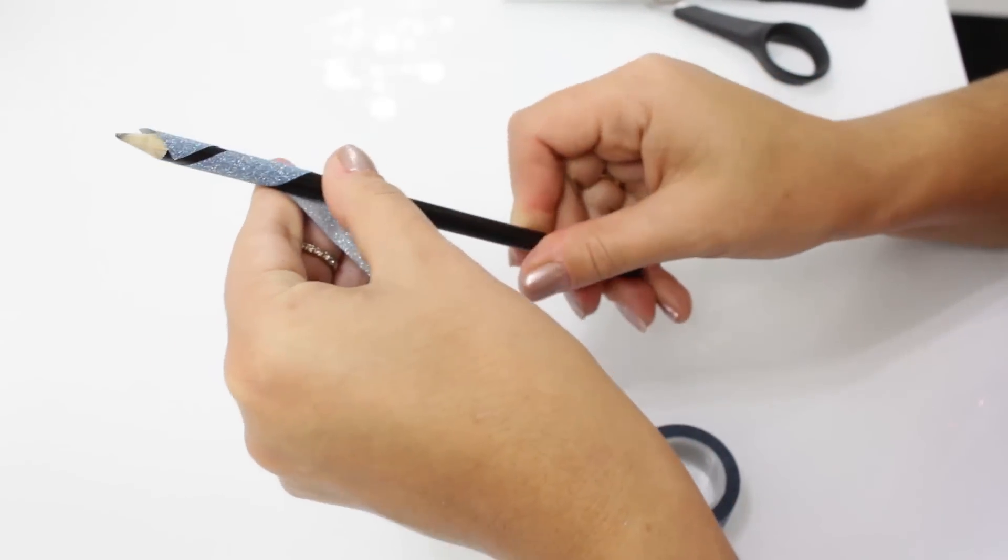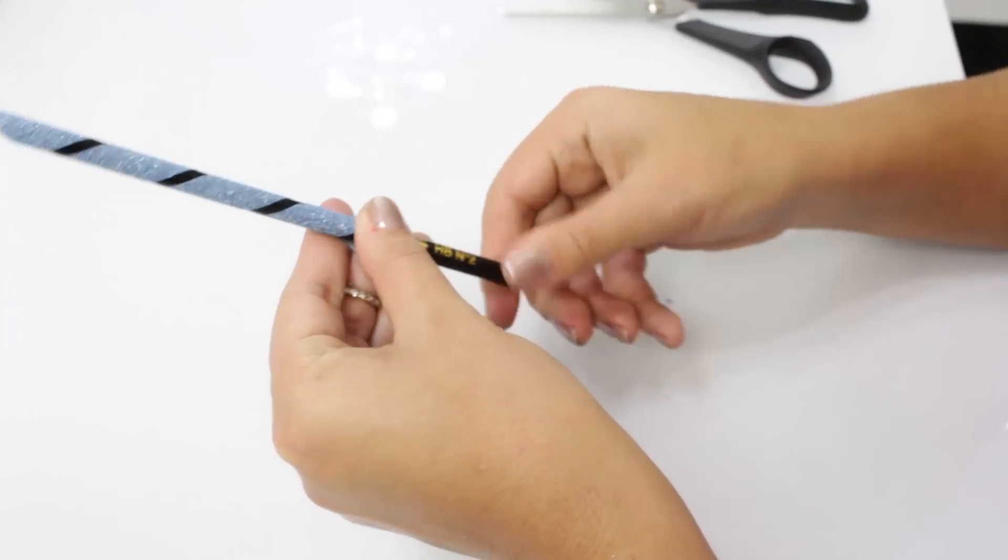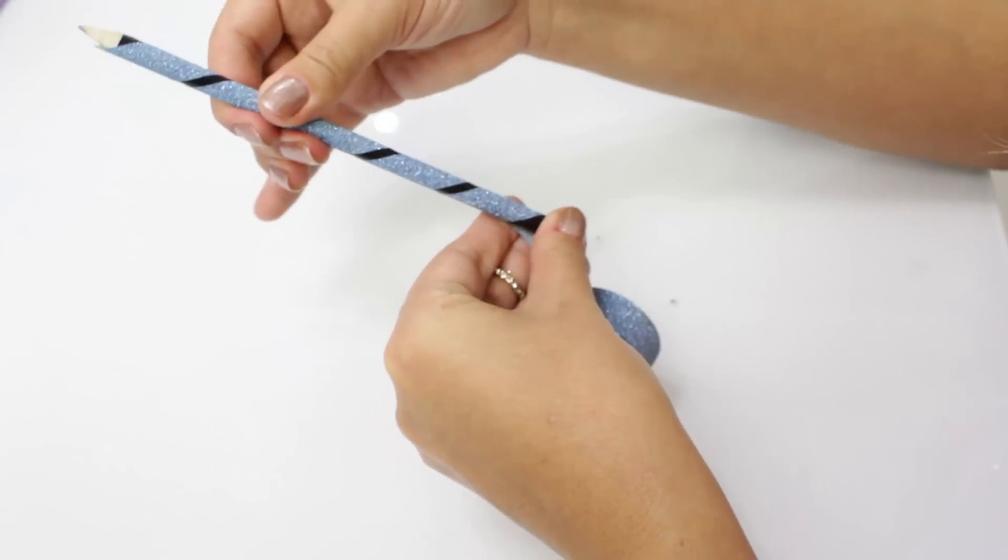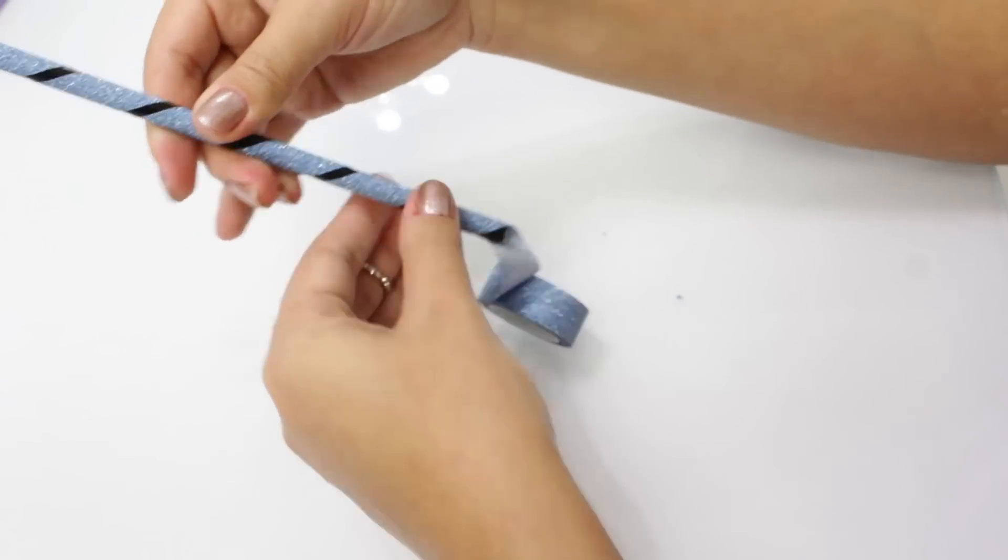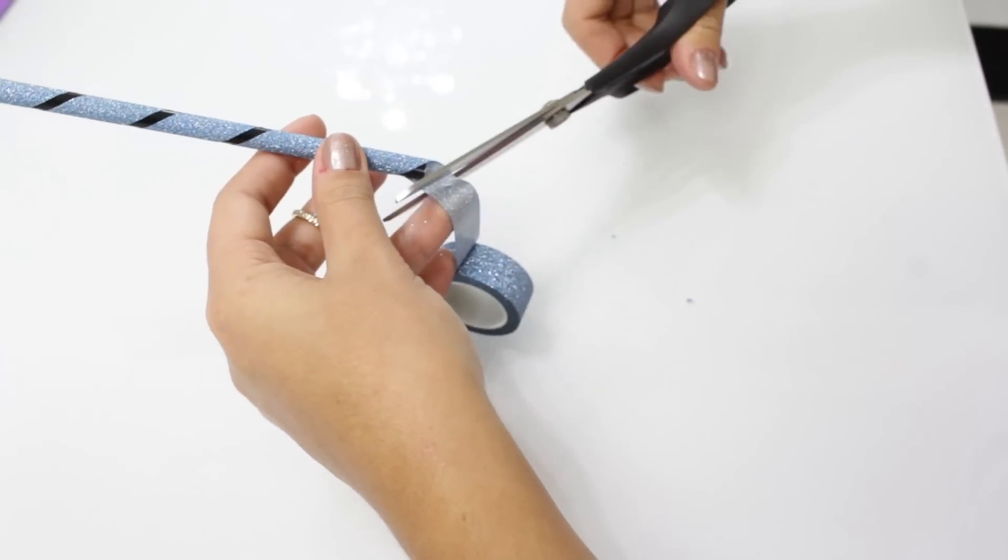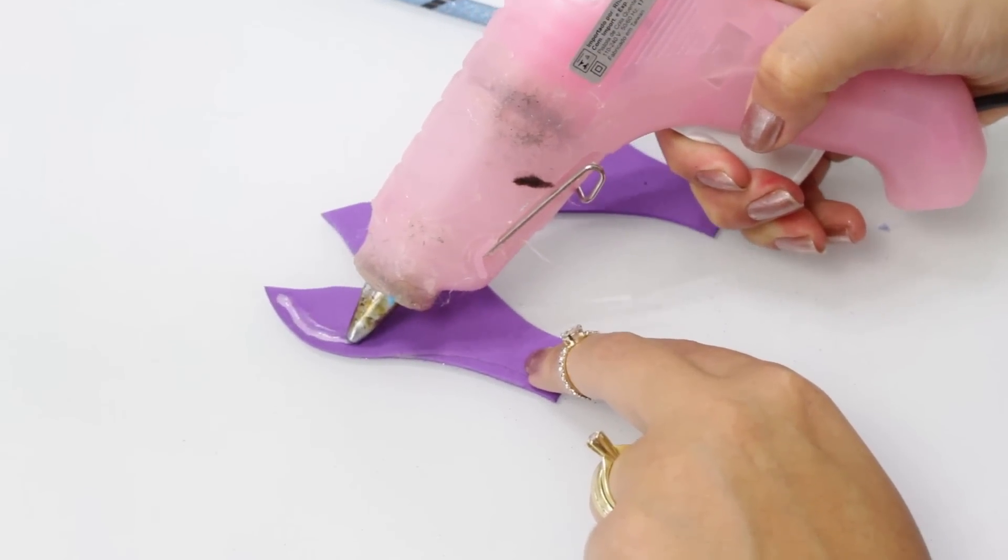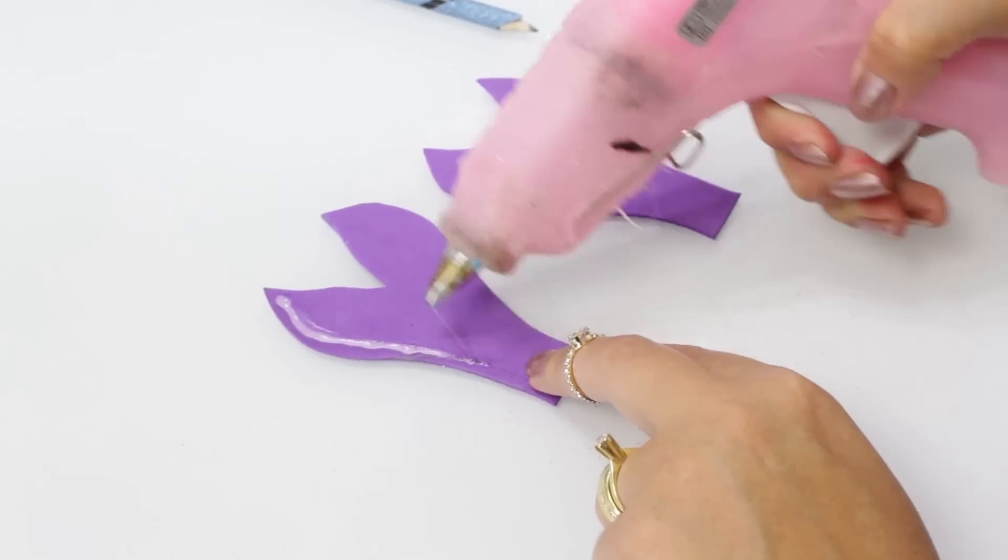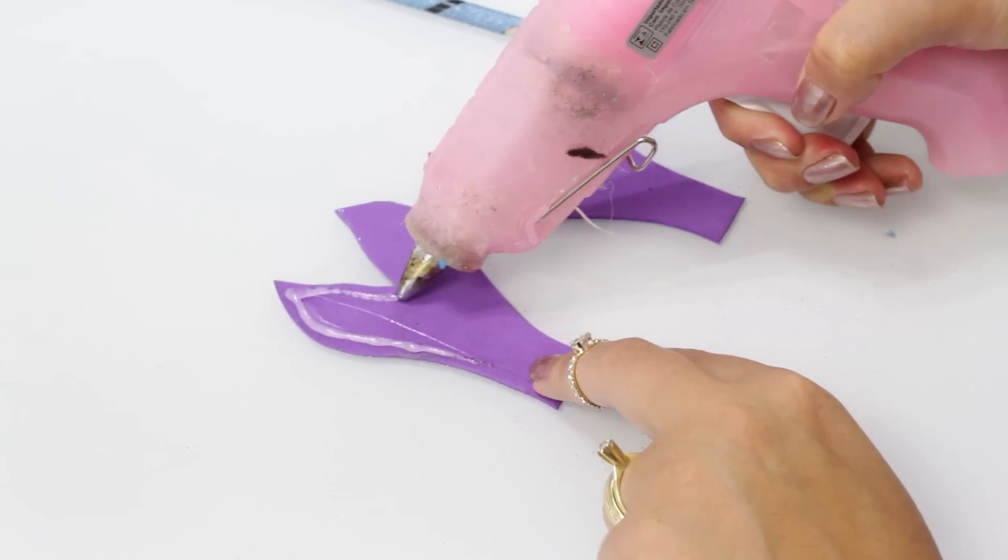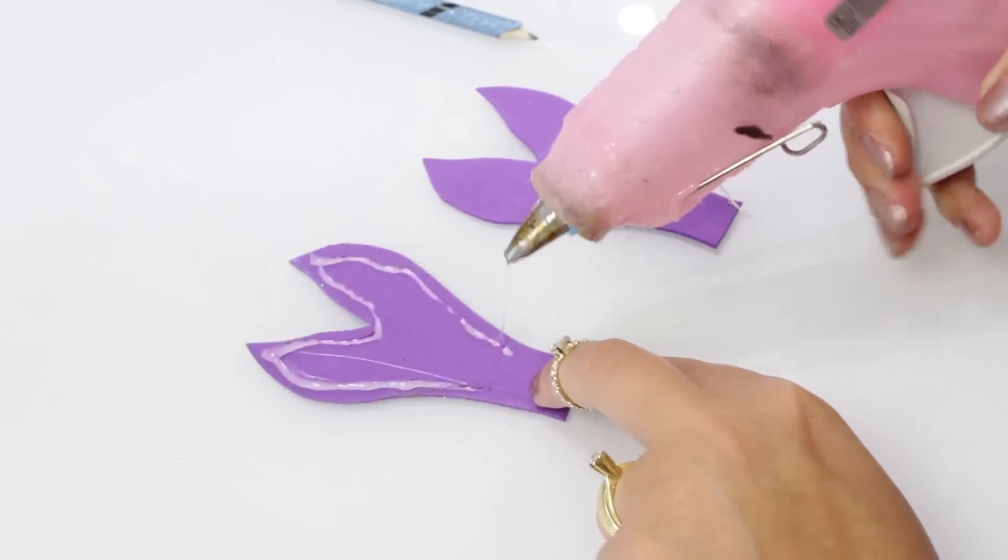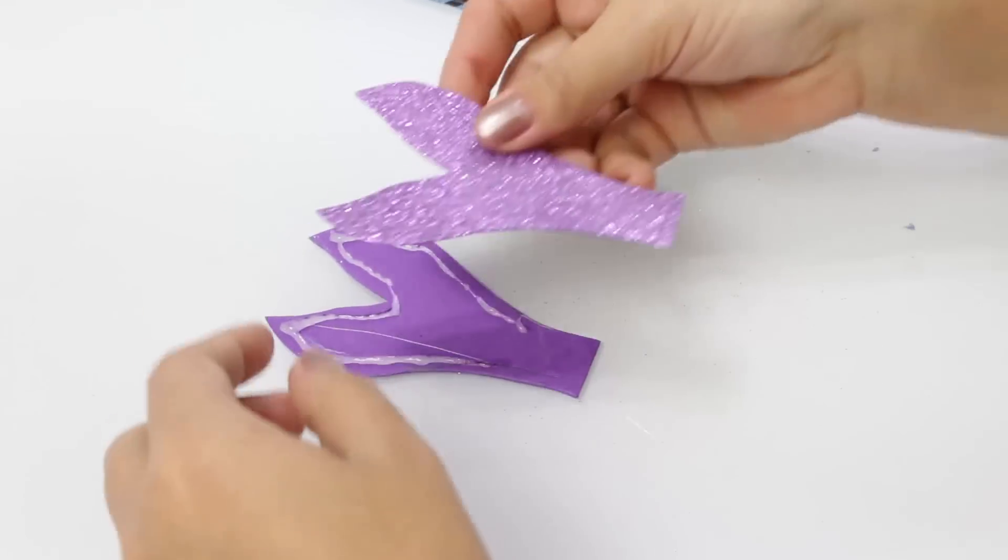Em seguida, eu vou pegar a minha fita adesiva decorativa e vou envolver no meu lápis. Vou pegar aqui primeiro com azul, vou envolver desse jeitinho que vocês estão vendo. Vou deixar um pedacinho no preto mesmo. Pode até cobrir inteira, eu preferi deixar um pedacinho do preto à mostra, mas aí fica de acordo com a sua preferência. E aí pro lápis que eu encapei com a fita decorativa azul, eu vou vir com a minha cauda lilás. Vou passar cola quente em torno dela, vou juntar os dois lados.